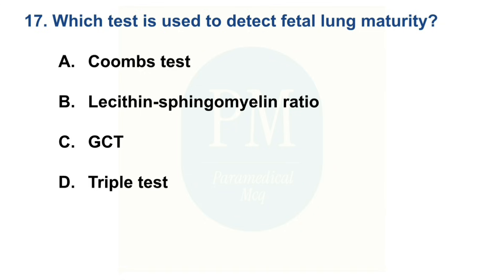Which test is used to detect fetal lung maturity? Option A: Coombs test. Option B: Lecithin-sphingomyelin ratio. Option C: GCT. Option D: Triple test. The correct option is Option B: Lecithin-sphingomyelin ratio.